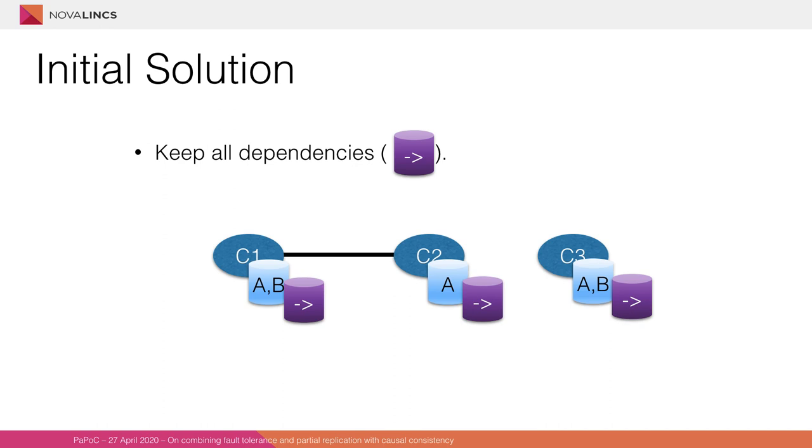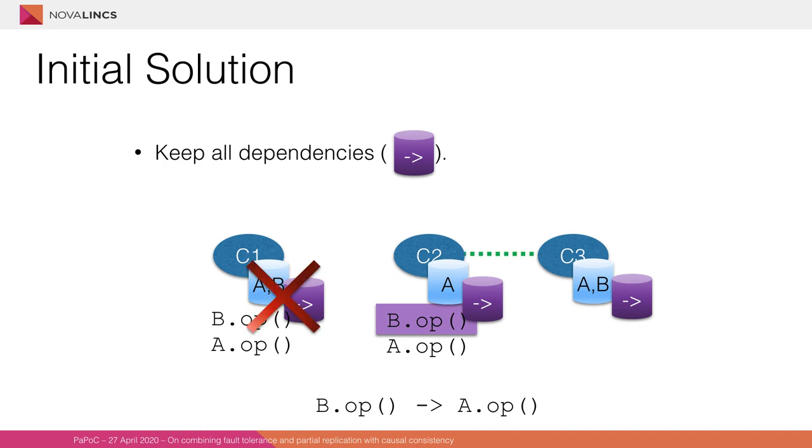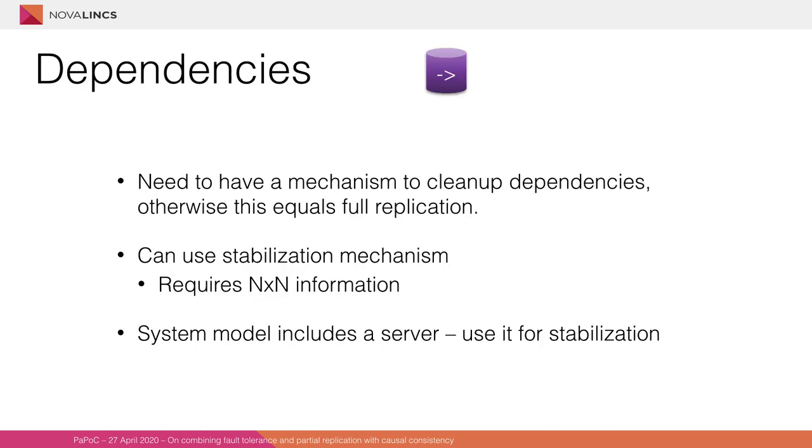For an initial solution, we will have a separate datastore locally to every client, which we'll call the dependency store. From the previous scenario where client1 sends its operations to client2, the operation on B, instead of being discarded or not received at all, would be stored in this local datastore. Now, just as before, if client1 fails and client2 attempts to synchronize with client3, it can send its operations on A to client3, and it will also be able to solve the dependencies, as its extra datastore has them stored locally. Now, there needs to be some form to clean up the dependency store, otherwise this just goes back to full replication. As soon as you receive an operation for objects you're not interested in, they have to be kept forever.